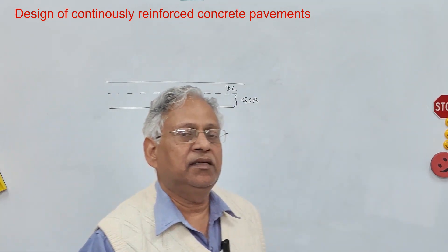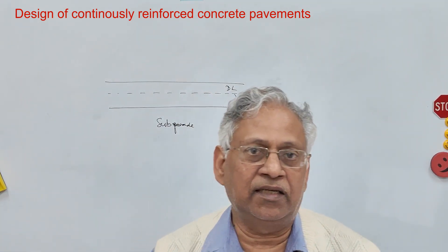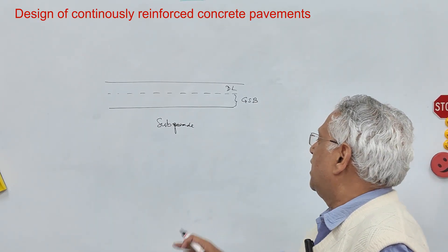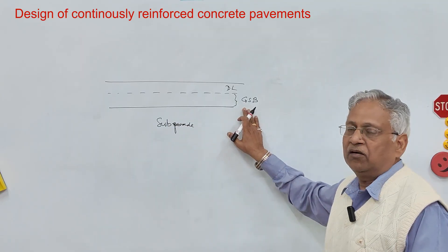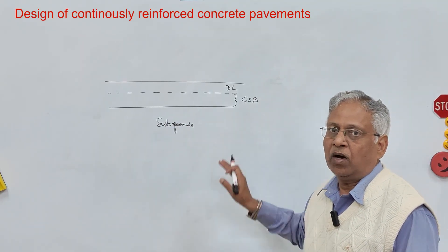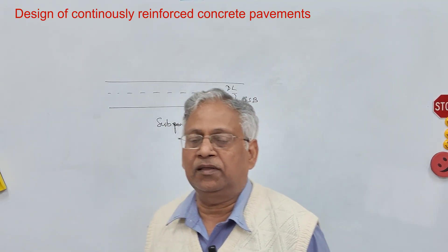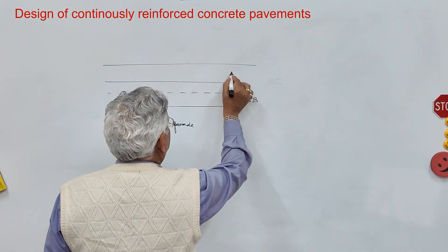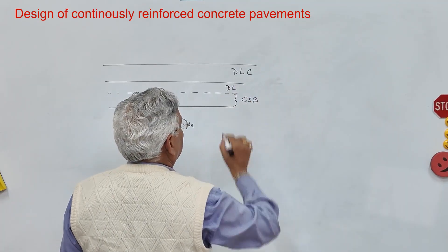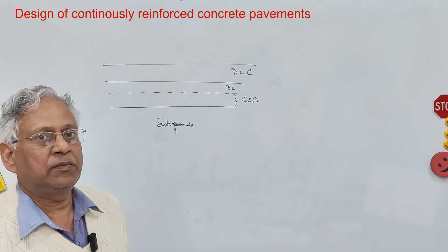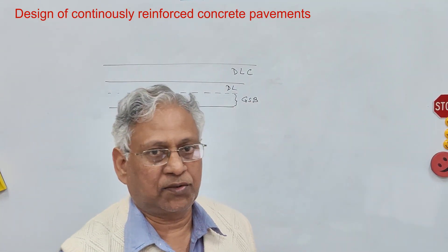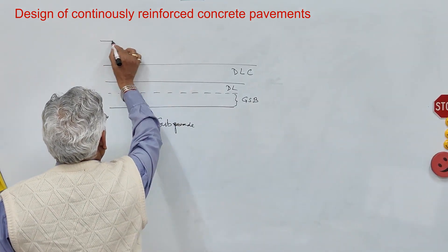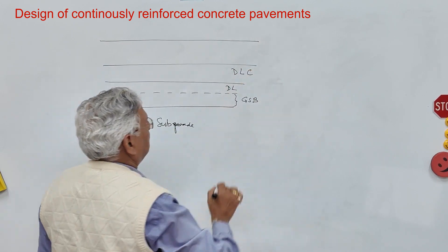The drainage layer can be as per grading 5 and 6 given in table 400.1 of MORTH specifications, and the GSB layer can be of any grading type 1, 2, or 4 of the same table. Above that you have the base, which can be either DLC or a bituminous layer. Above that you provide the slab, which is your pavement quality concrete.